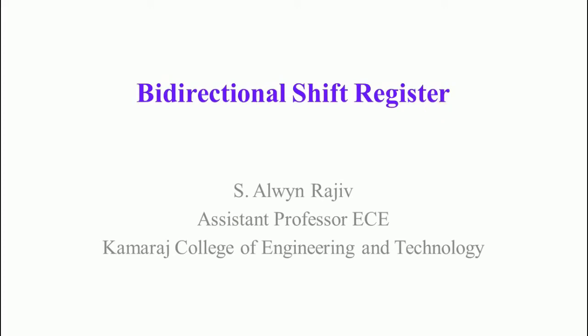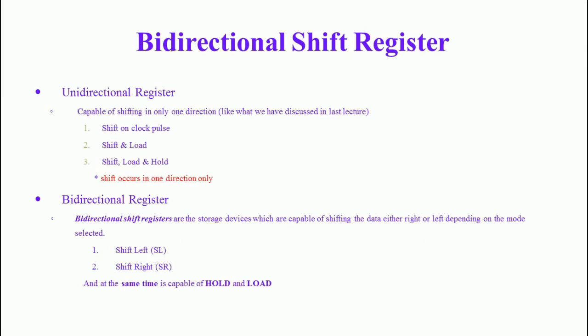In this lecture we are going to see about the bi-directional shift registers. In my previous lecture we discussed about unidirectional shift registers: serial in serial out, serial in parallel out, parallel in serial out, and parallel in parallel out shift registers. These types of shift registers shift occurs only in one direction — either left or right.